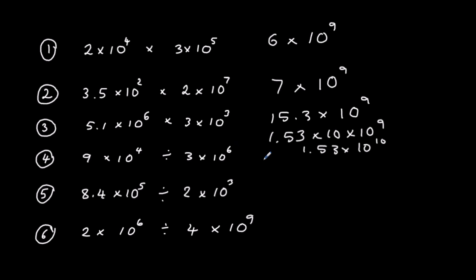Number 4: 9 divided by 3 is 3, and 10 to the power of 4 divided by 10 to the power of 6 is 10 to the power of minus 2. So the answer is 3 times 10 to the power of minus 2.